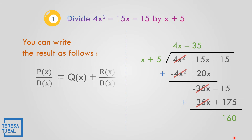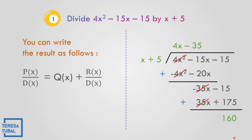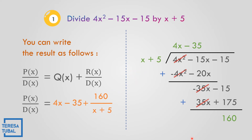So what is the quotient? The quotient is 4x minus 35. The remainder is 160 and the divisor is x plus 5. So the result is 4x minus 35 plus 160 all over x plus 5.